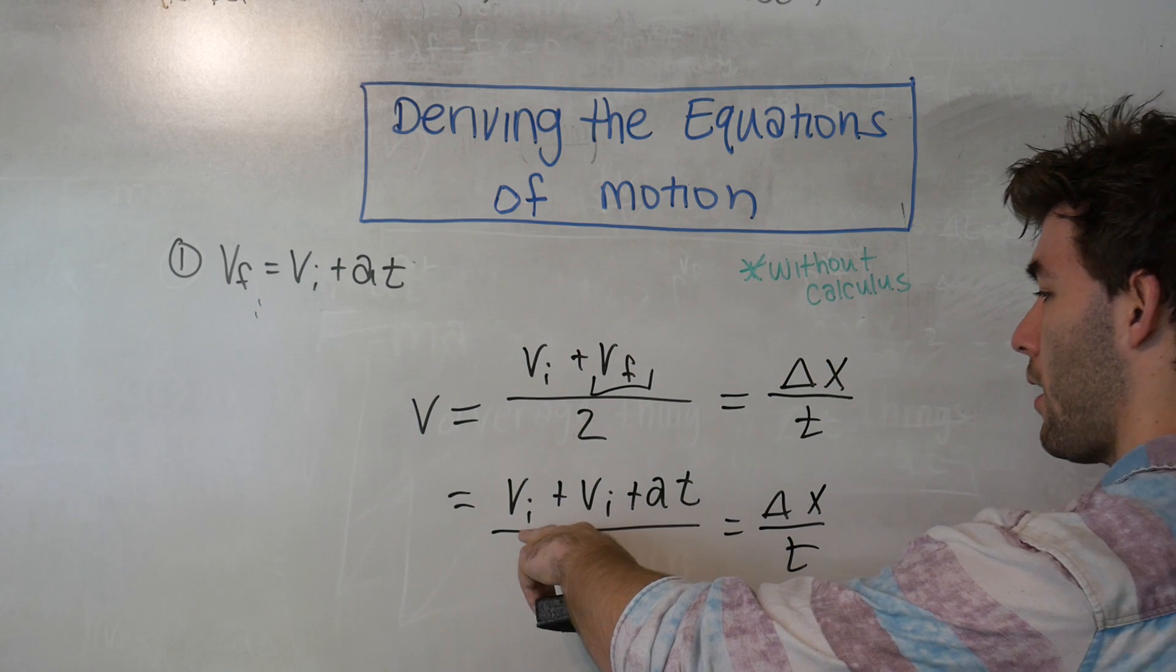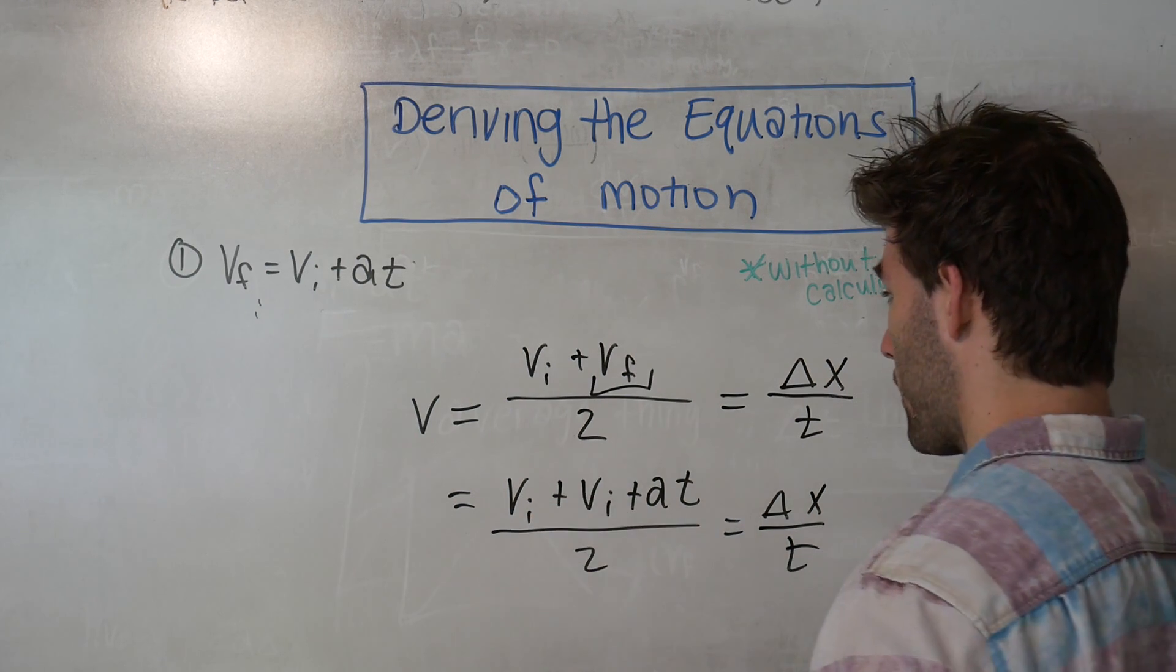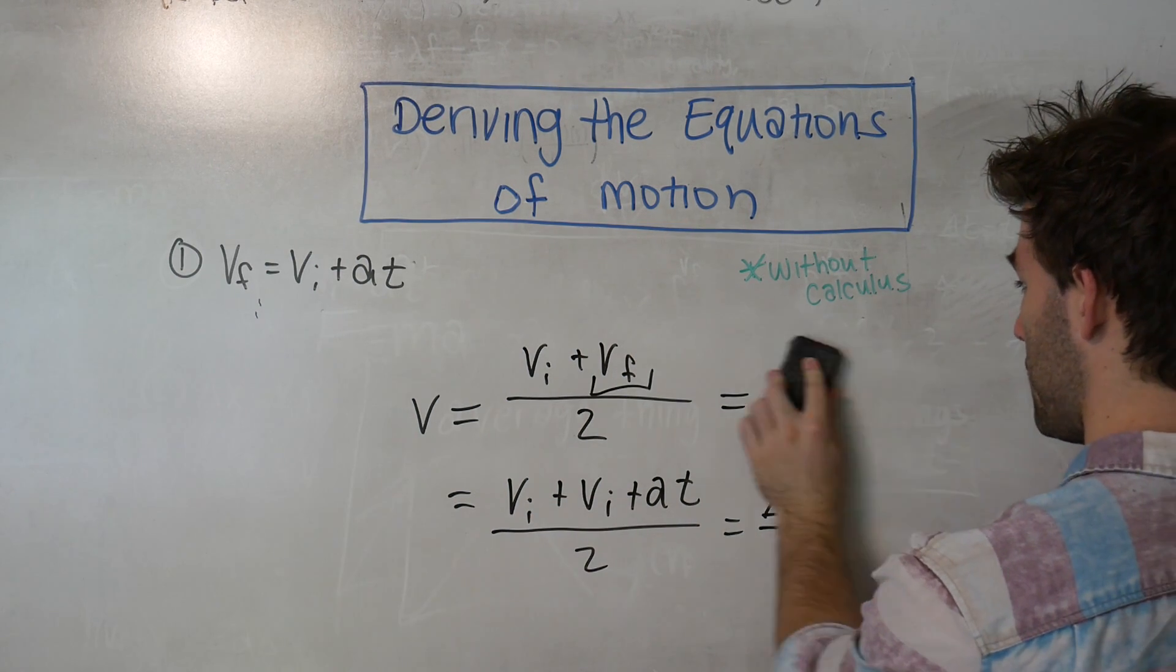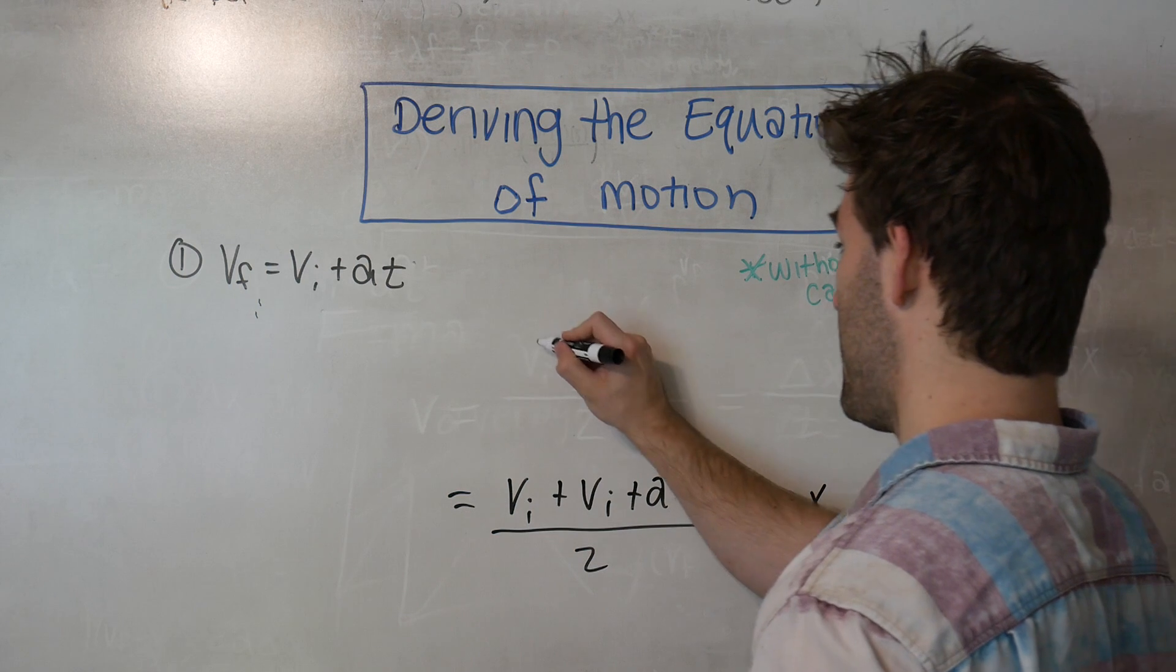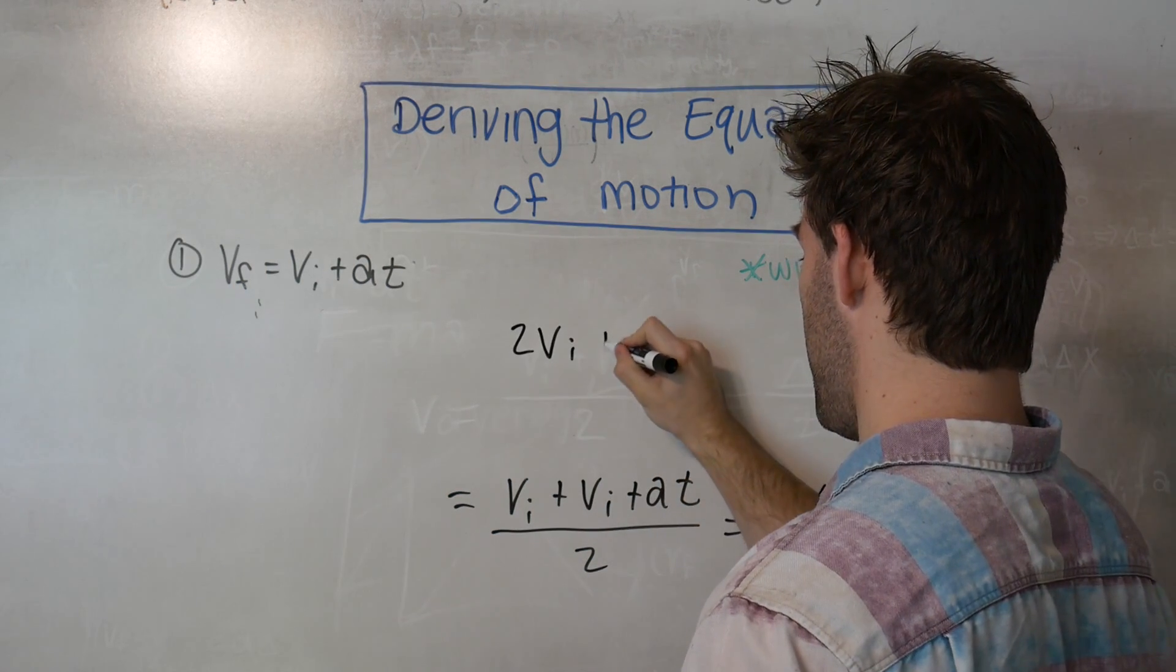Okay, so we have two mutual terms up top. We're going to combine those together. And we get 2VI plus AT.